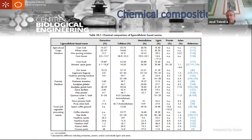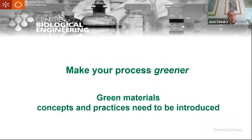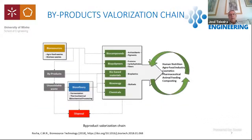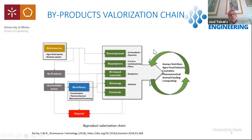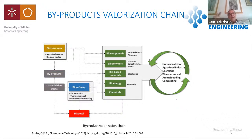To add value to this material, one possible strategy is to separate these fractions. We need to develop green or greener extraction processes and introduce them into this processing chain. We have bioresources from which we can obtain different bioproducts included in a biorefinery step, and we can also go directly from extraction to new products. In the end, what we expect to get are products applicable in human nutrition, agro-food industry, cosmetics, pharmaceutical, animal feeding, and composting — forming an integrated valorization chain.